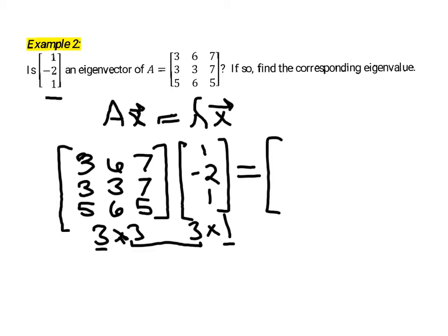So the first entry, I'm going to work my way across the first row, or the row of the first matrix, and then down this column. So 3 times 1, so 3 minus 12 plus 7. So 3 times 1 plus 6 times negative 2 plus 7 times 1. And then we have 3 times 1 plus 3 times negative 2 plus 7 times 1. And then 5 times 1 plus 6 times negative 2 plus 5 times 1.